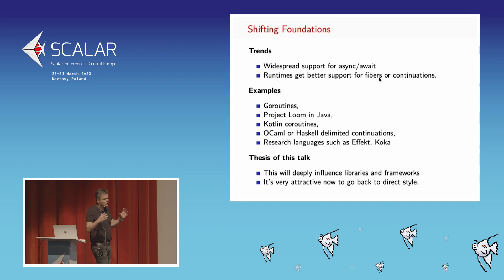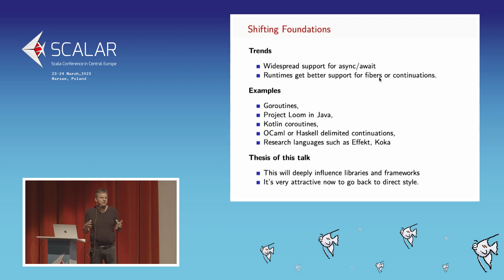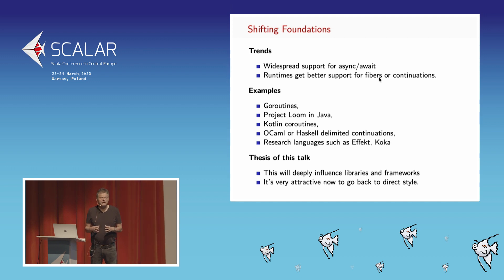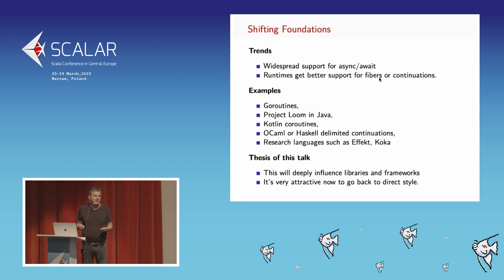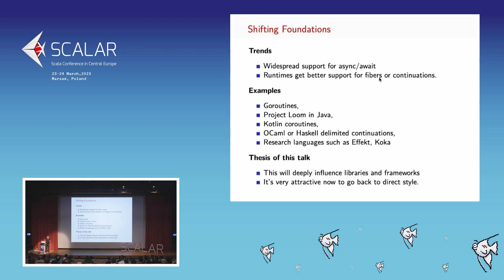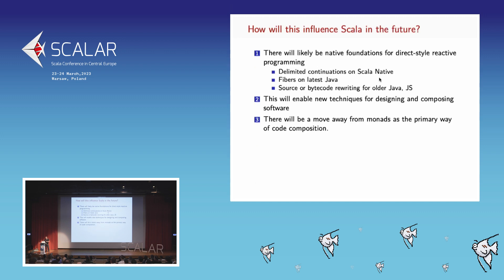The thesis of my talk is that this will have a deep influence on the libraries and frameworks of the future. In particular, it's very attractive now to go back to direct style. The opposite of direct style is continuation passing style, and typically a control monad — that's what a lot of libraries do now: Cats Effect, ZIO, Monix Task — essentially monadic libraries. The argument is that in the future this style might no longer be that relevant.